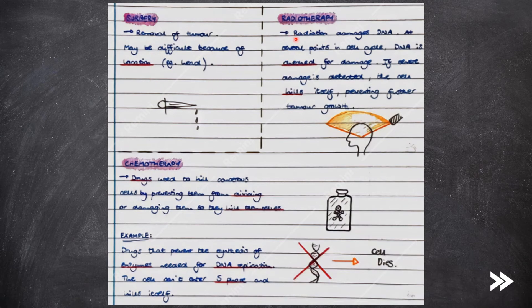Radiotherapy involves radiation damaging DNA. At several points in the cell cycle, DNA is checked for damage. If severe damage is detected, the cell kills itself, preventing further tumour growth.